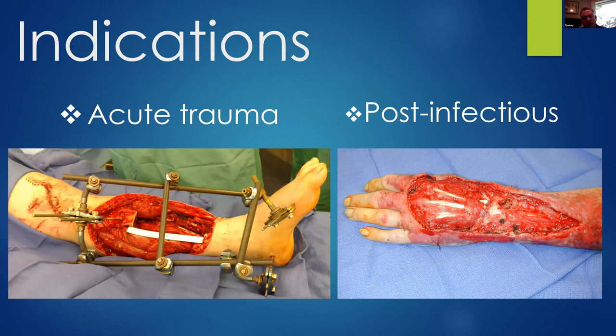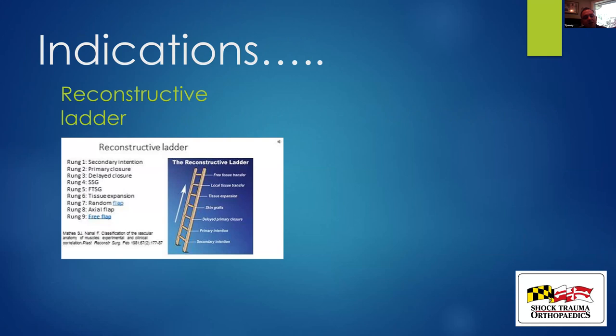Indications for massive soft tissue defects include infection — such as necrotizing fasciitis — traumatic open tibia fractures, and tumor, like the osteosarcoma patient we mentioned. Historically, many recognized the reconstructive ladder as an important guide, progressing from the most simple soft tissue reconstruction to the most complex: secondary intention, primary closure, delayed closure, skin grafting (split or full thickness), expansion, and then local and free tissue.